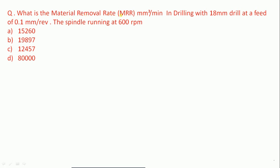What is the material removal rate (MRR) in mm³/min in drilling with an 18 mm drill? The diameter of the drill d = 18 mm, feed f = 0.1 mm per revolution, and spindle speed n = 600 RPM. We are given d, feed, and speed, and we need to find the material removal rate.